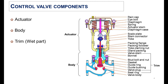There are mainly three parts of the control valve. The first one is the actuator, the second is the body of the valve, and the third one is the trim. In the trim, mainly the wetted parts of the valve are covered, and the other detailed components of each part of the valve can be seen here.